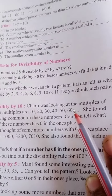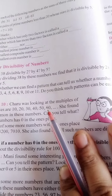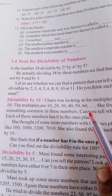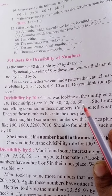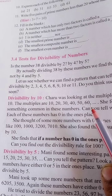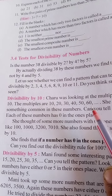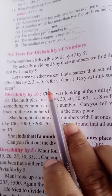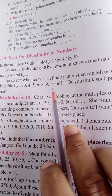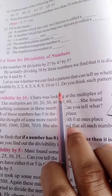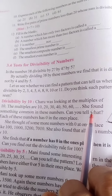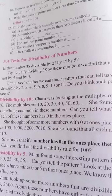Let us see whether we can find a pattern that can tell us whether a number is divisible by 2, 3, 4, 5, 6, 8, 10, or 11. Do you think such a pattern can be easily seen?